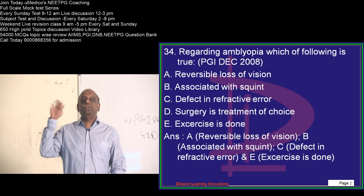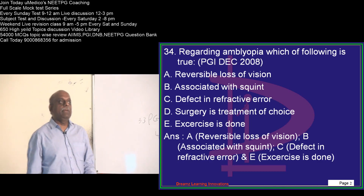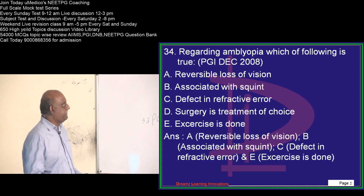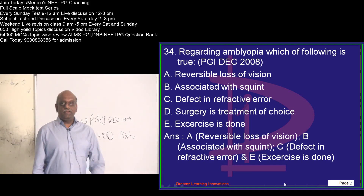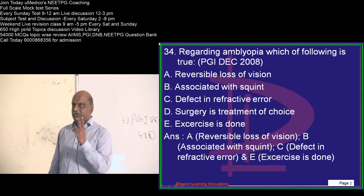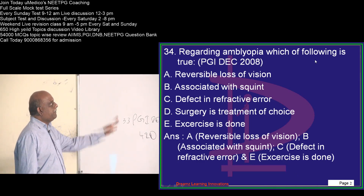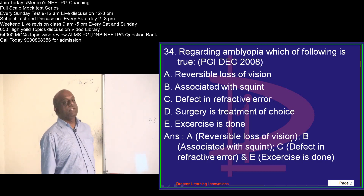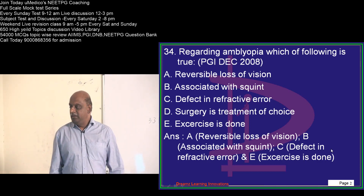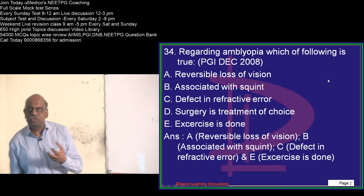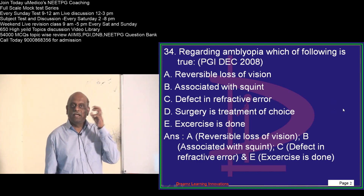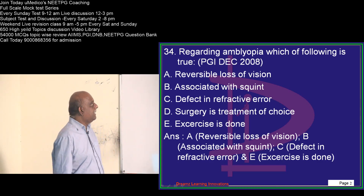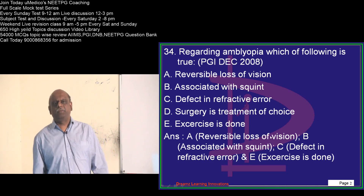There is a reversible loss of vision in amblyopia. If you happen to treat it early, you can avoid the loss of vision. It is strabismus — the squint — which leads to development of amblyopia. Any defect or refractive error can also lead to amblyopia. If the child is taught to do optometric exercises, they can overcome amblyopia. Surgery is not the treatment of choice.